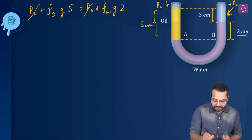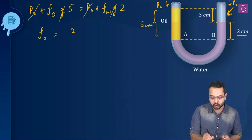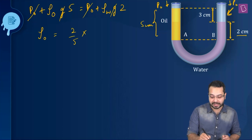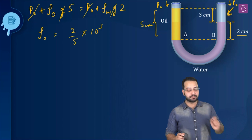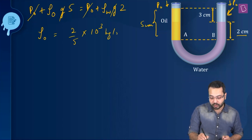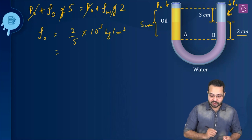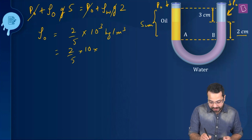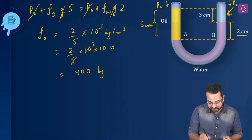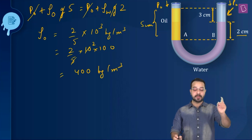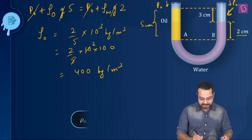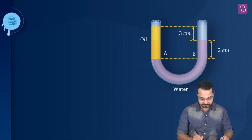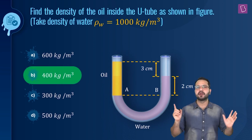P₀ cancels and g cancels. I am left with ρ_oil = (2/5) × density of water. The density of water is 10³ kg/m³, so this becomes (2/5) × 10 × 100 = 400 kg/m³. That is the density of oil. Looking at the options, option B is going to be my right option.